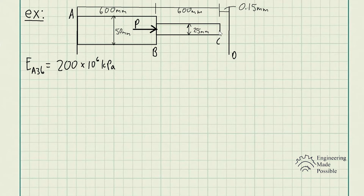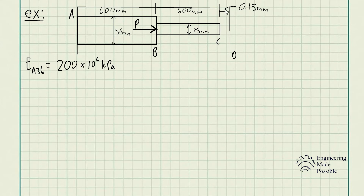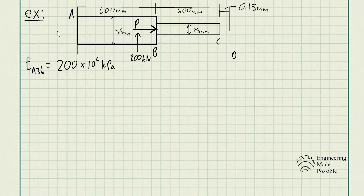We have an assembly of two rods, both made of the same A36 steel, with diameters of 50 millimeters and 25 millimeters with the appropriate dimensions. The difference in this problem is that the rod is not initially up against the wall — there's a gap of 0.15 millimeters, which is important to consider. A force P equal to 200 kilonewtons is applied at point B, and we're asked to solve for the reactionary forces at A and D.